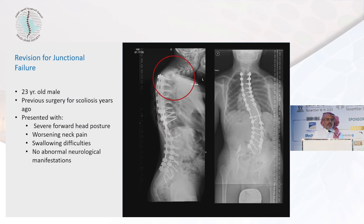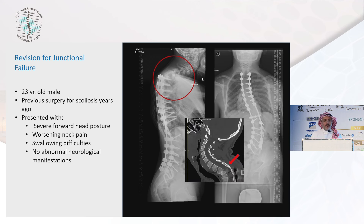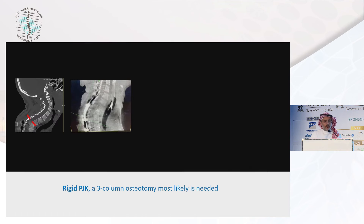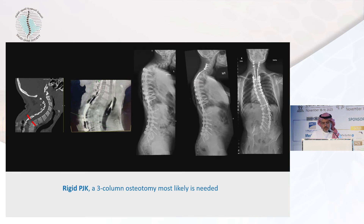Another example, slightly different: a 23-year-old who had surgery years ago, presenting with severe neck pain and forward posture. Looking at the CT scan carefully, it's a fused junctional failure. We have both fused and non-fused types, and the way we address the fused type is by osteotomy. There is no way to correct a rigid junctional failure without osteotomy. A simple ACDF from the front with posterior osteotomy achieved good correction.